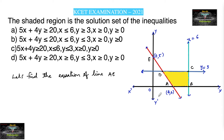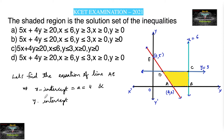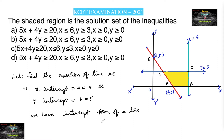For line AE, since on the x-axis it is (4, 0) and on the y-axis it is (0, 5), the x-intercept is 4 and the y-intercept is 5. So we use the intercept form of a line, which is x/a + y/b = 1.